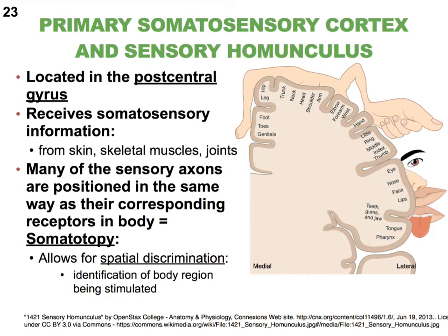Some areas are much more sensitive because they have many more sensory receptors, which leads us to something called spatial discrimination. If you put two pins very close together on your lips, you can distinguish two separate points. But keep that same distance and apply it to your back — you'll probably feel just one poke. Your back is much less sensitive, as reflected in how little cortical area is devoted to the torso.